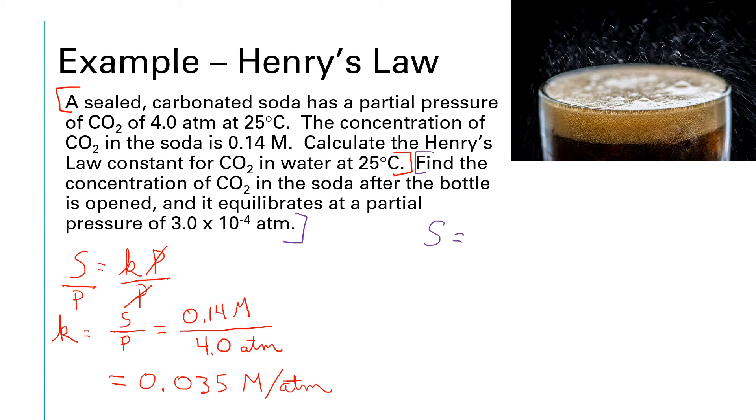So we know that the solubility is given by the Henry's law constant times the partial pressure of the gas. In the first part of this problem, we found that the Henry's law constant is 0.035 molar per atmosphere. And we are told that the pressure is 3 times 10 to the negative 4 atmospheres. So if I run that through my calculator, I get an answer of 1.05 times 10 to the minus 5. For units, we have atmospheres and divide by atmospheres. So the atmospheres cancel out with the divide by atmospheres and the only unit left is molarity.